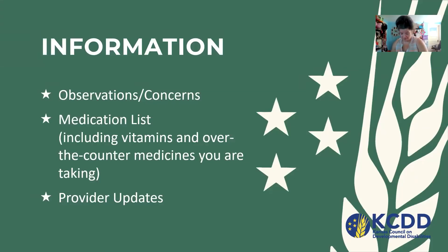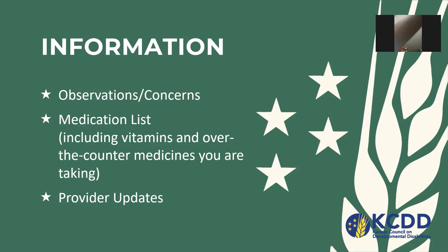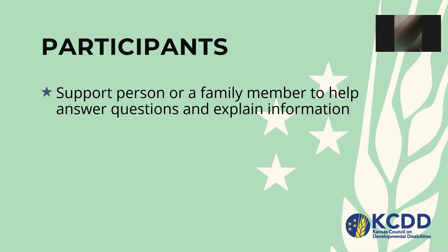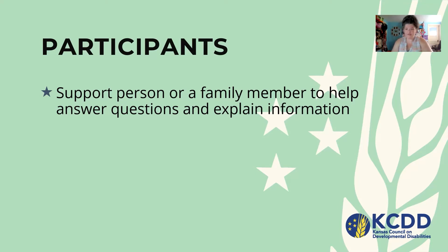The third thing is information. The information you want to share with your doctor includes your observations or concerns, your medication list — including vitamins and over-the-counter medicines — and provider updates. The fourth thing is a support person or family member, to answer questions and relay information.